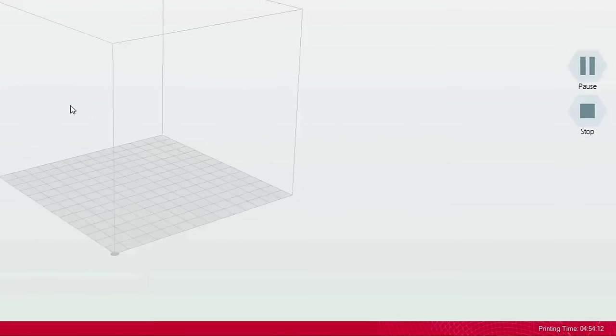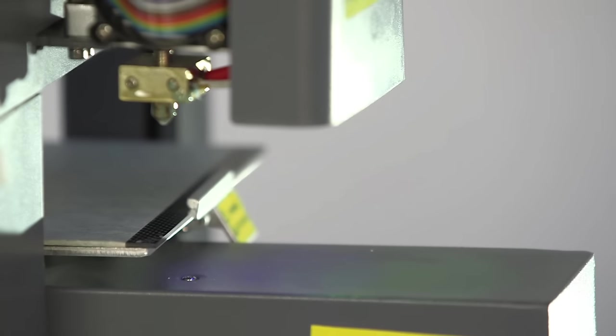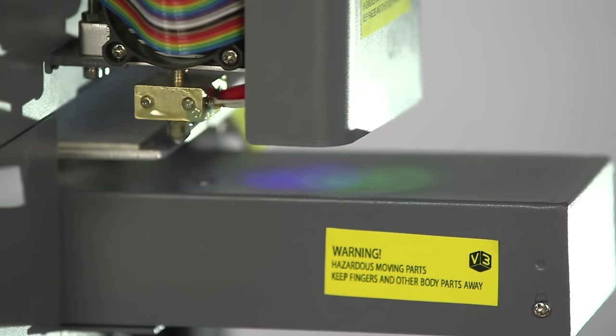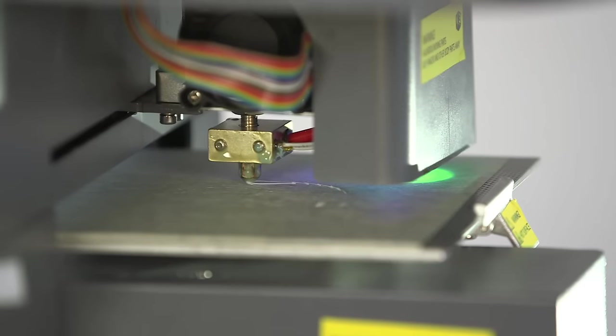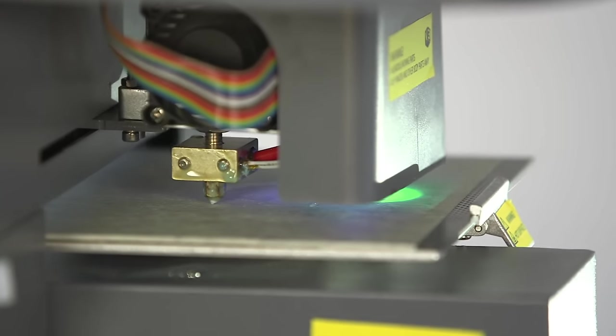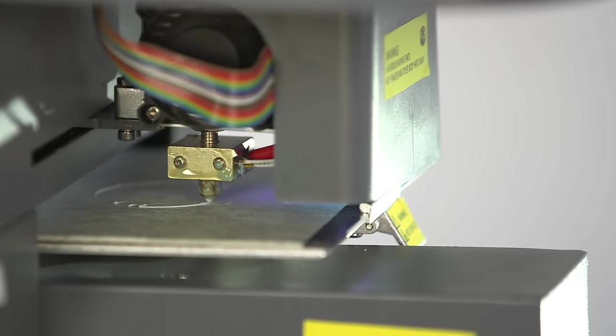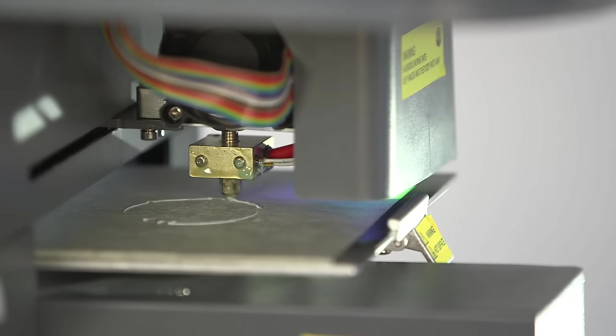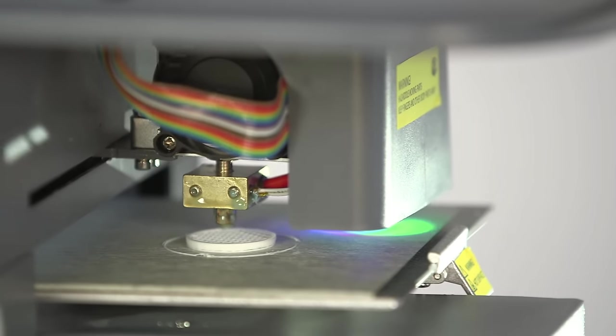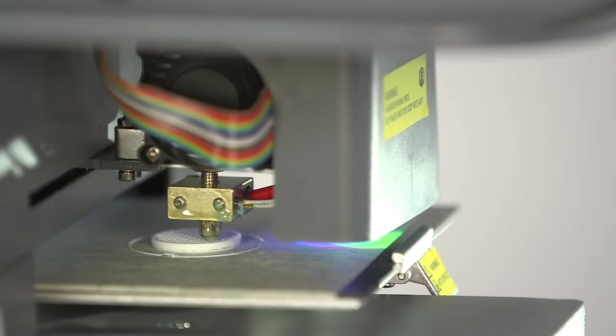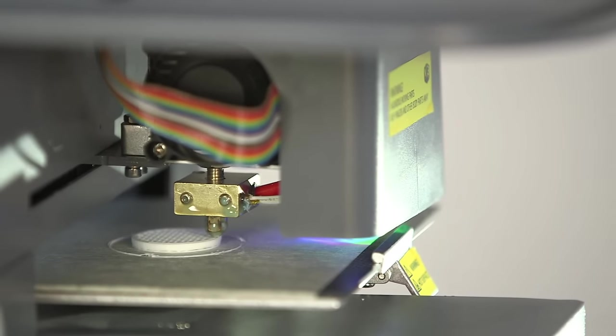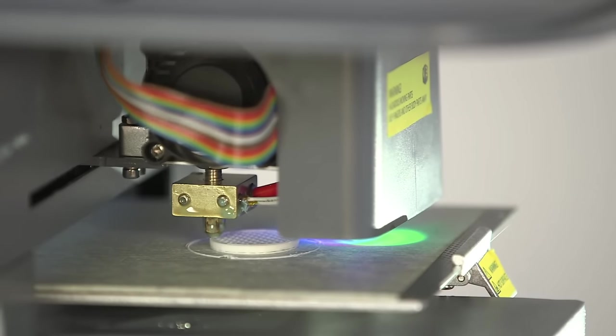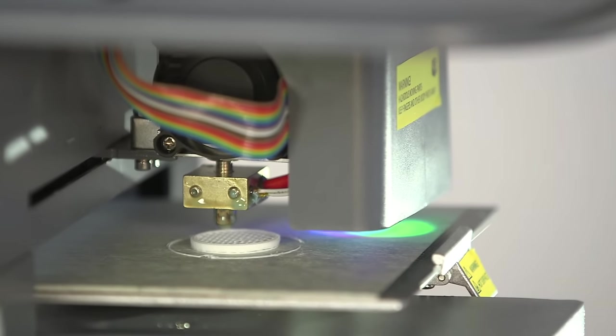The estimated print time is shown in the bottom right hand corner of the screen. At the start of the print, the plate rises to meet the nozzle, which first lays down a skirt of plastic before beginning on the object itself. It's a good idea to watch the printer deposit the first few layers to give you peace of mind that the foundations are secure. Once you've done that, you can sit back and watch or wander off and do something completely different. It's a good idea to periodically check the print is going okay and that the filament is feeding freely off the spool.